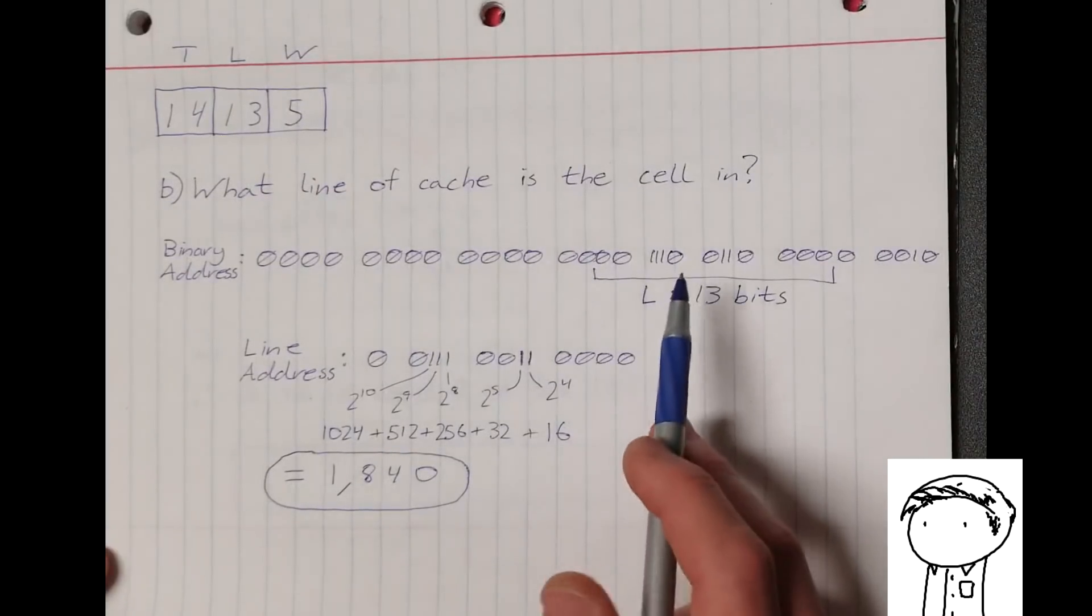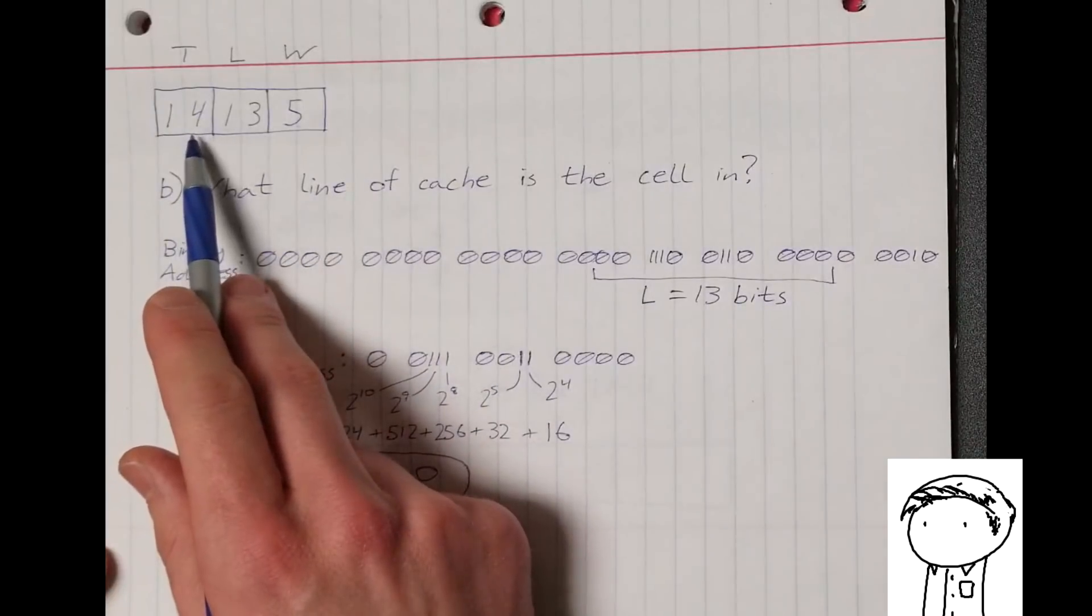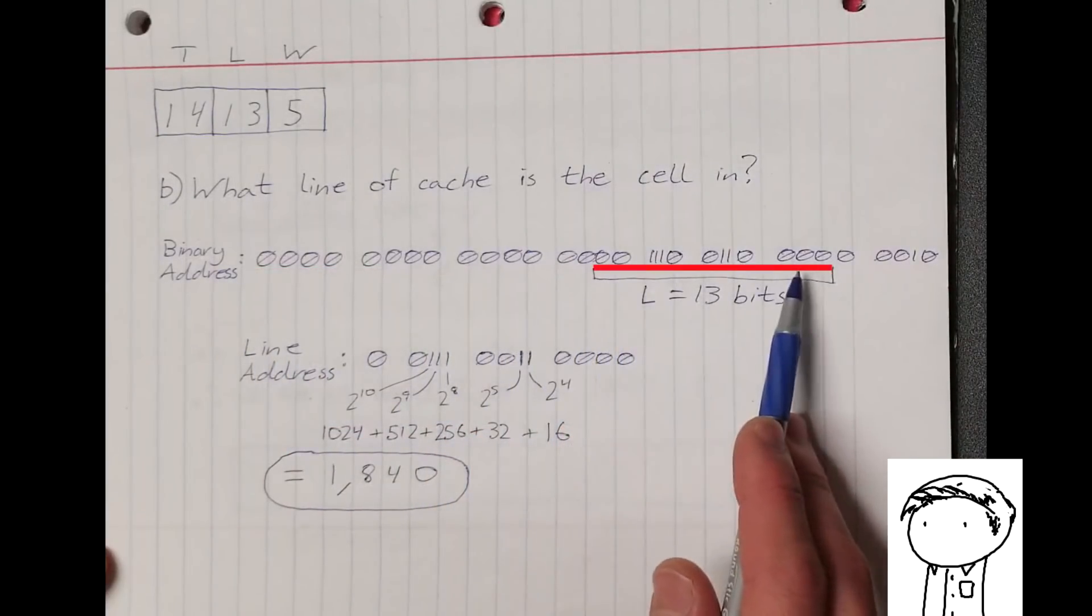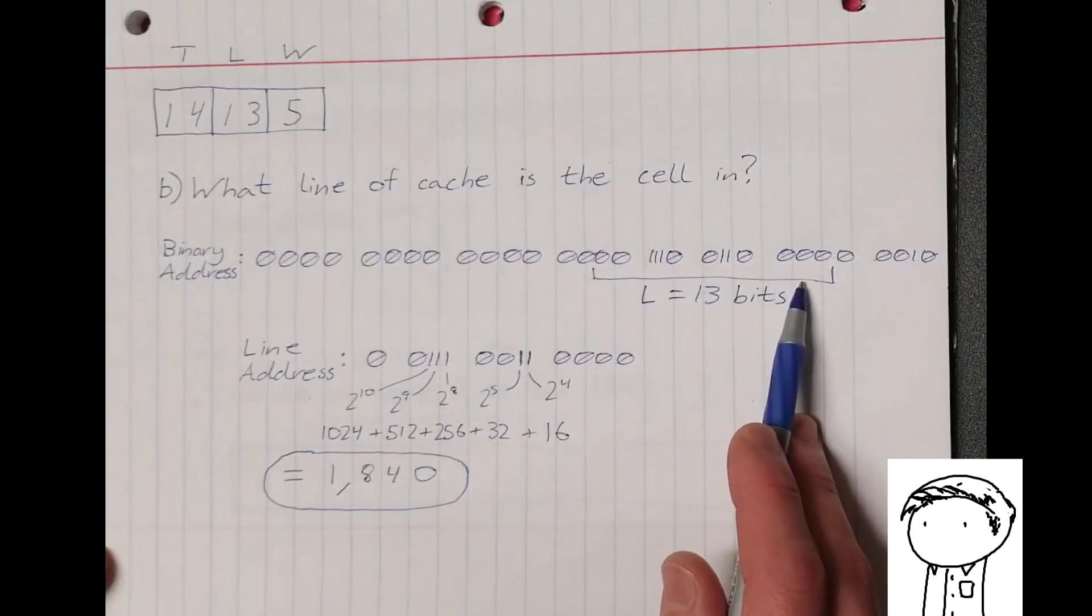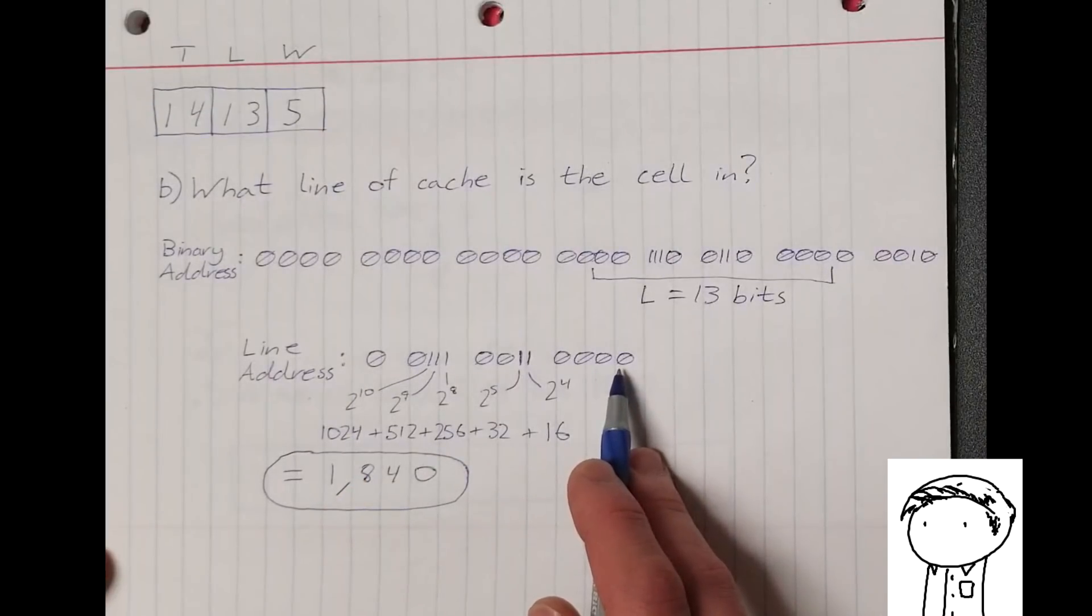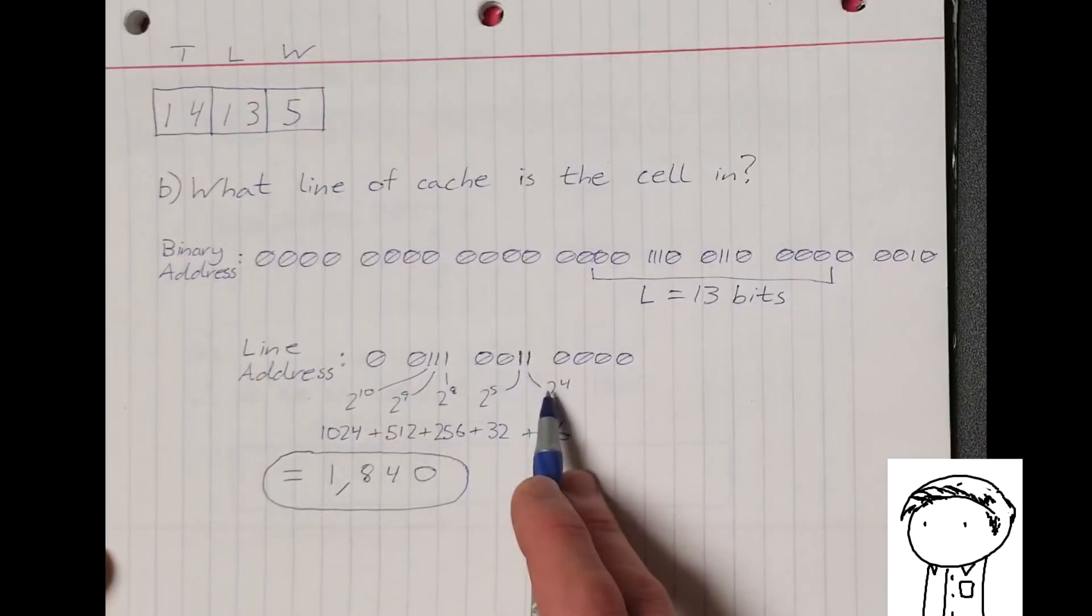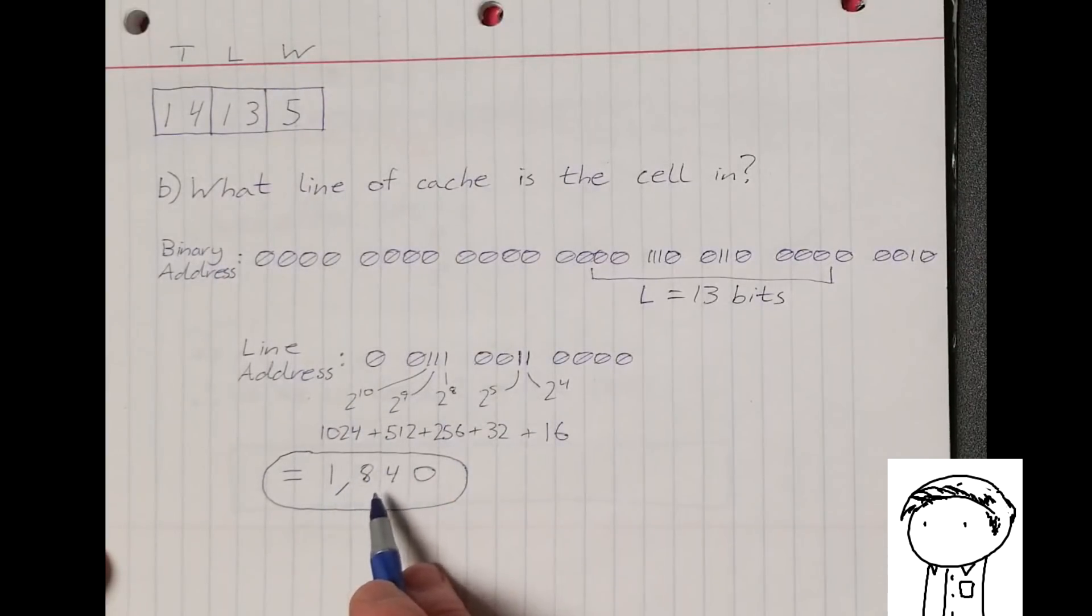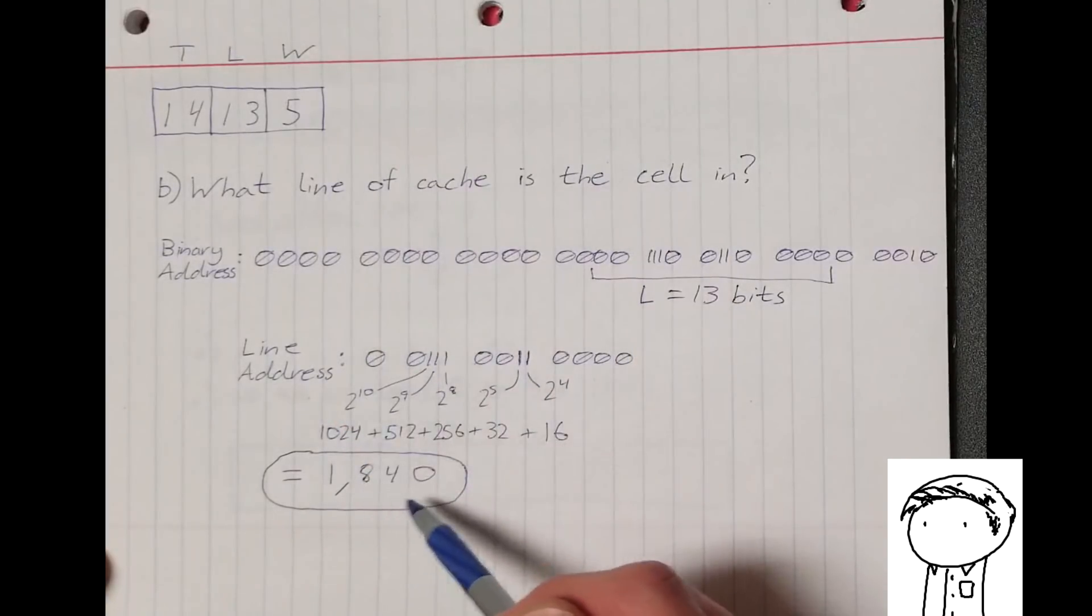Okay, now we're going to look at what line of cache the cell is in. So as we saw earlier, we have a 32-bit binary address, which we know consists of 14 bits for the tag, 13 bits for the line, and 5 bits for the word. The 14 leftmost bits are our tag, the next 13 bits are our line, and the rightmost 5 bits are our word, and since we're concerned with the line of cache, we're going to look at the 13 bits in the center for our line. So all we really need to do is add up the base 2 values where we have a 1 in our binary line address. So we have a 1 in the 2 to the 4 bit placement, a 1 in 2 to the 5, and again in 2 to the 8, 2 to the 9, 2 to the 10. When we add up the decimal corresponding numbers of each of these base 2 values, we get 1,840. So we know that our cell is in line 1,840 of the cache.